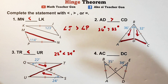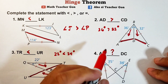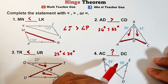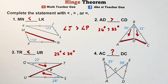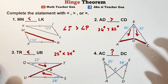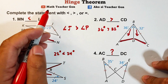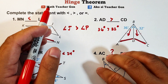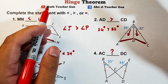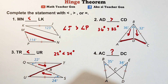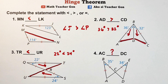For the last item, I'll let you answer in the comment section: which is the appropriate symbol to compare side AC and side DC? I hope you learned something from this video on how to use the Hinge Theorem in comparing sides of triangles. Don't forget to subscribe to our YouTube channel, Teacher Gone, and follow on Facebook and TikTok. Like and subscribe so you'll be updated on our latest uploads!